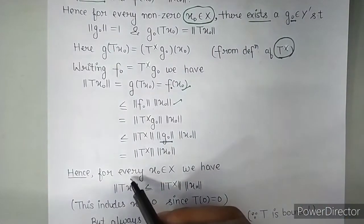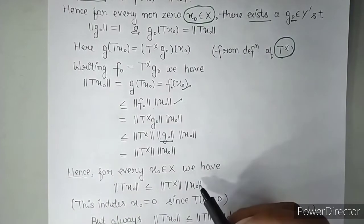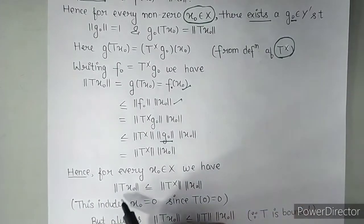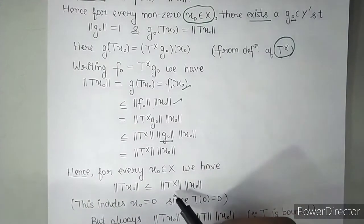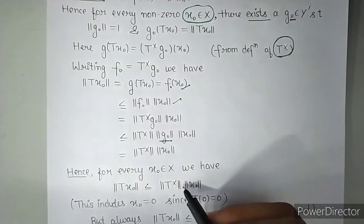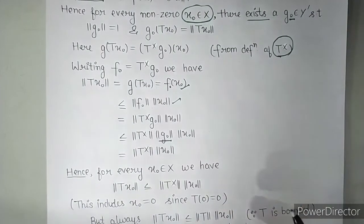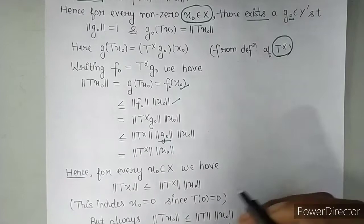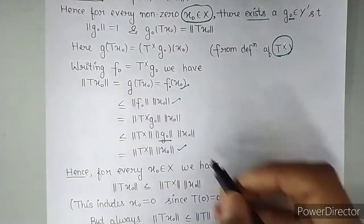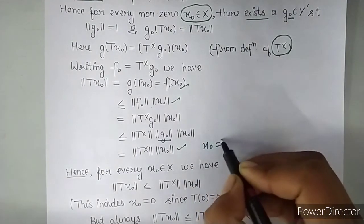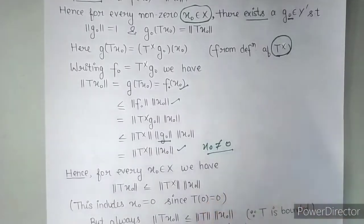Hence for every X belonging to capital X, we have norm of TX0 is less than or equals to norm of T star into norm of X0. Now what we said before, up to here, up to here I said that for non-zero X, because the Hahn-Banach theorem says, for every non-zero element of X, this thing will hold.